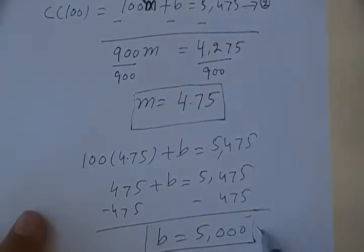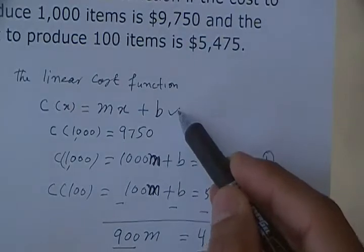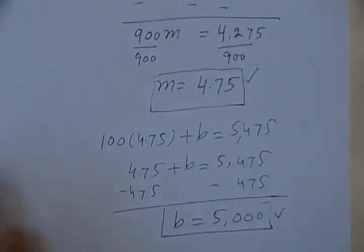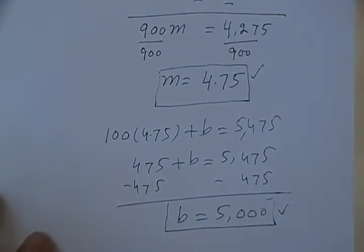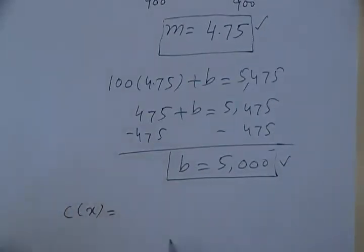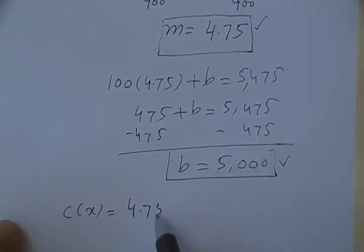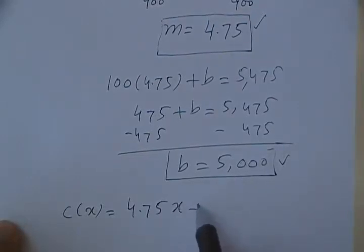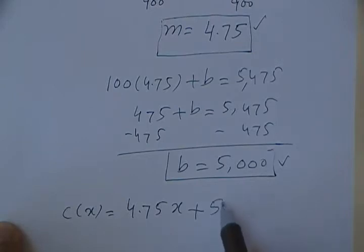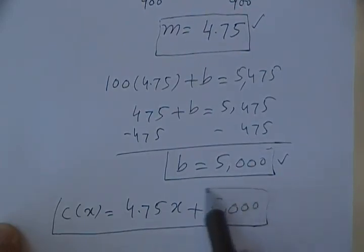Now using this b and m, plugging into the equation, we get the cost function. C of x equals 4.75x plus 5000. That is your cost function.